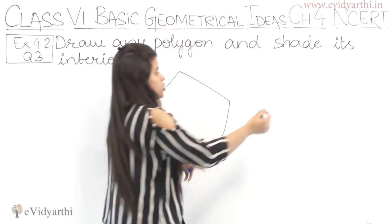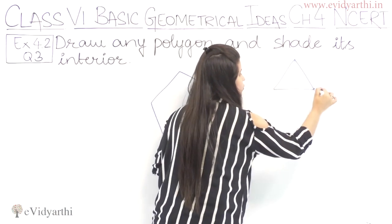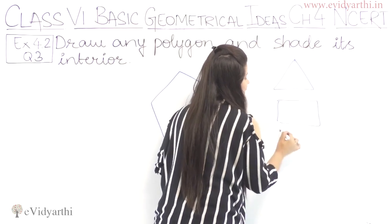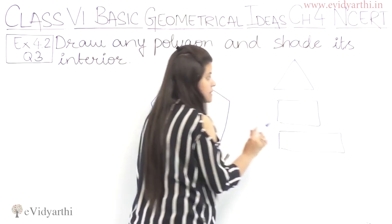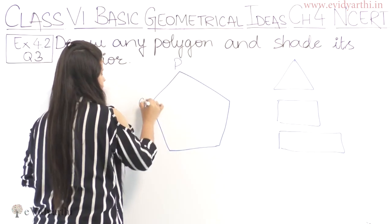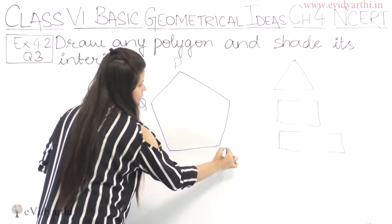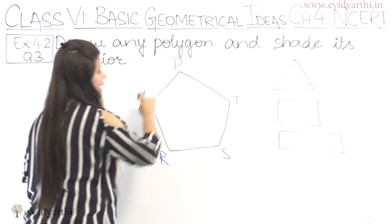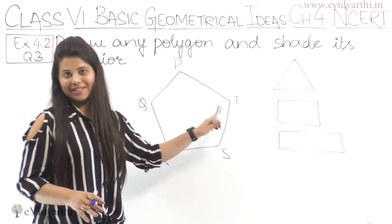And we have normal polygons, which are normal shapes - triangles, squares, rectangles. So here all these are polygons. So here we have a shape, we can name it as P-Q-R-S-T. So we have polygon P-Q-R-S-T.